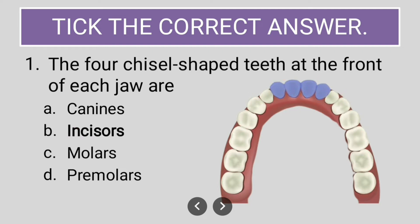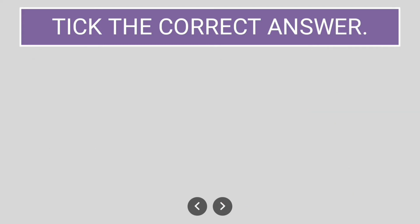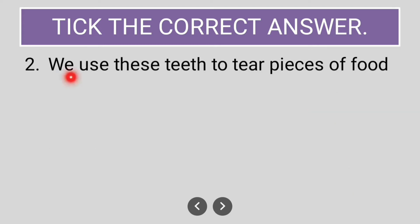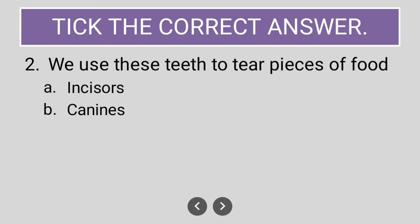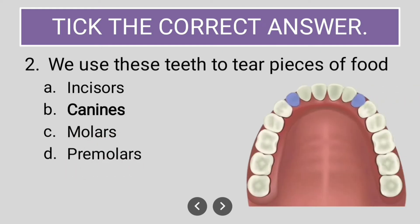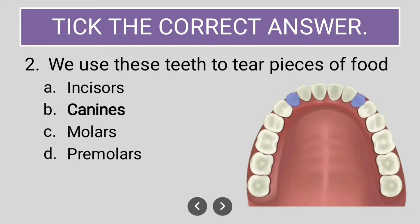The next question is: we use this tooth to tear pieces of food. The options are incisors, canines, molars, premolars. The correct answer is canines. These teeth are used to tear pieces of food.